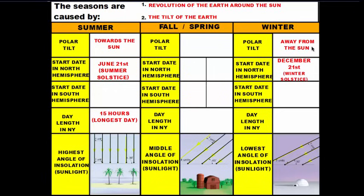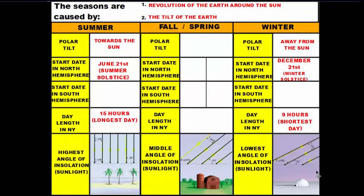The winter solstice is the shortest day of the year with approximately nine hours of daylight. The reason these characteristics differ is because of the angles of insolation — you're going to have a higher angle of insolation during the summer than during the winter.